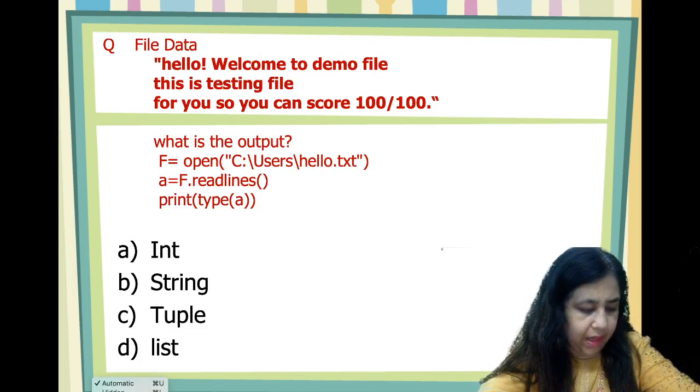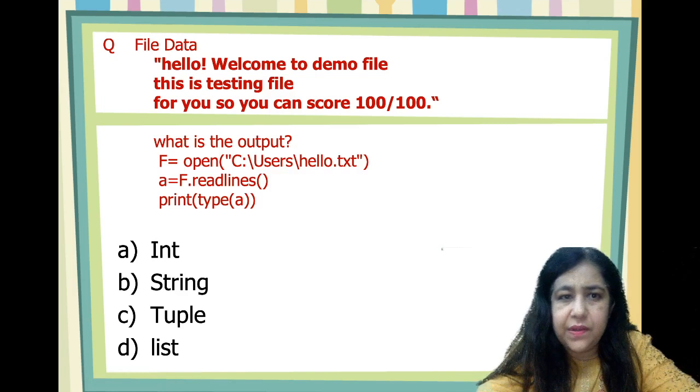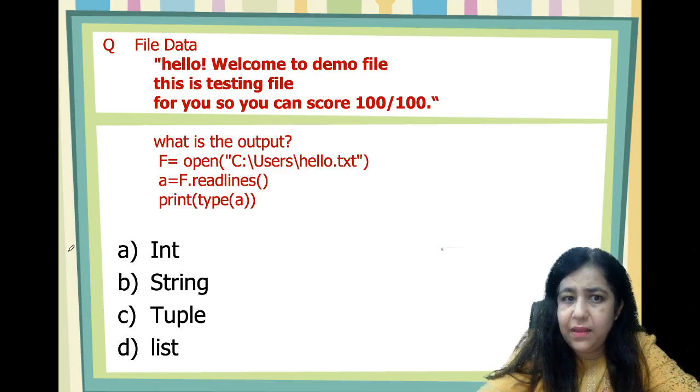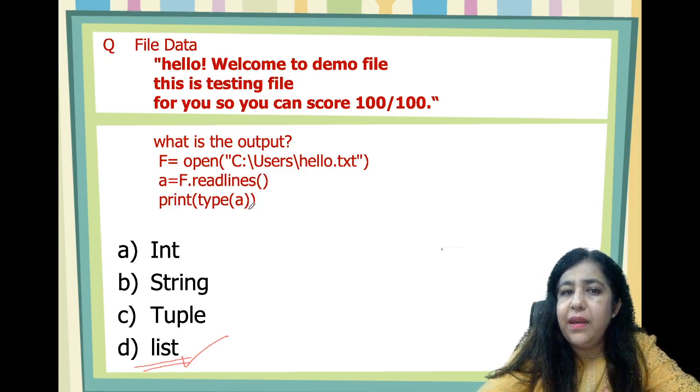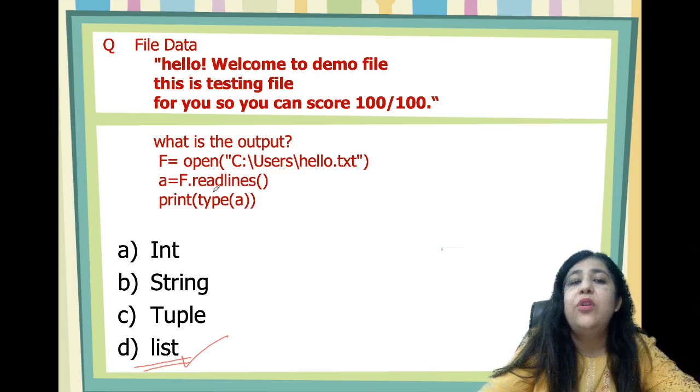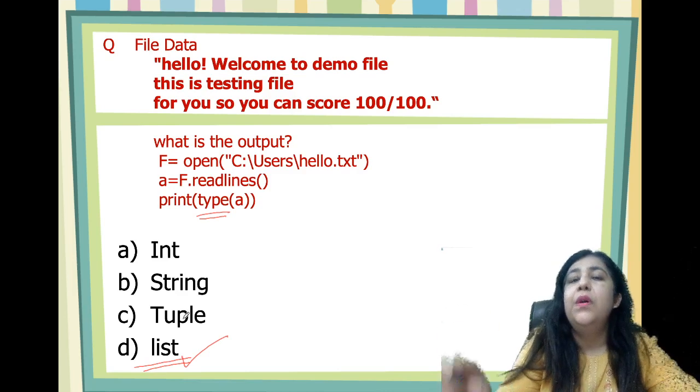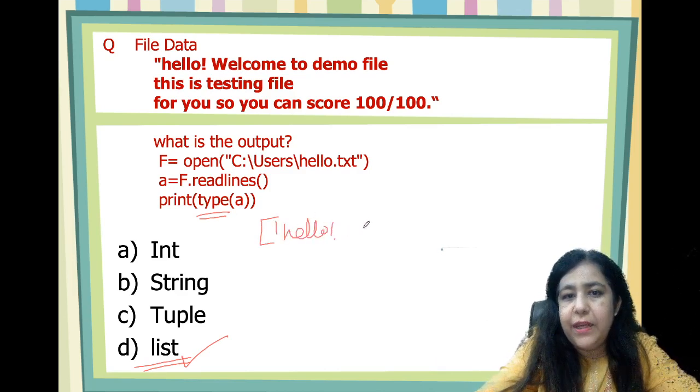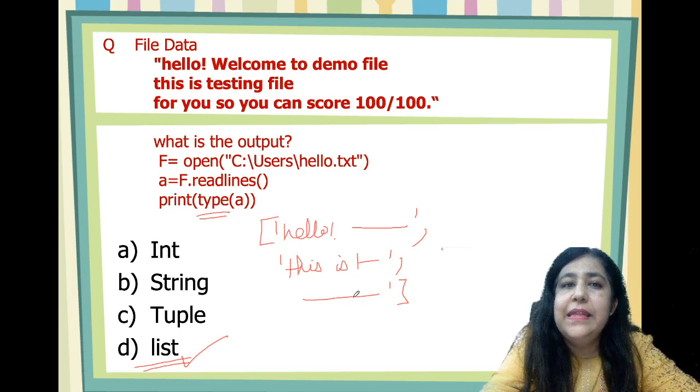Now, there is a code given here. And, you have told us the output. Hello, welcome to demo file and all is written. Now, the question is, what is the output? Let's see. A is equal to f.readlines. We have already done it. Print type A. This is a different way to ask the same question. So, we are printing type of A. I have already told you that the readlines gives you a list of strings. So, when we type it, what will be in the output? List. It gives you a list of strings. So, if this is a file, it will be like this. In the list, the first line will be, then comma, then second line will be, then comma, then third line will be, and so on. That is list of strings.